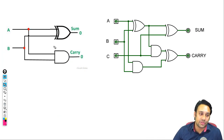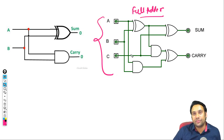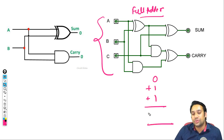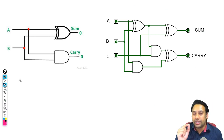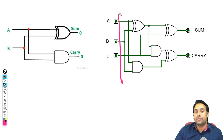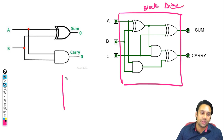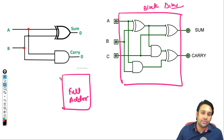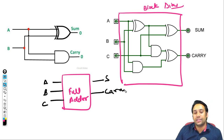Half adder is used to add 2 bits of information. Then you have a full adder — sum will be 0 and carry will be 1. We have a full adder for this sum and carry. Generally, this is a circuit diagram, but we can also represent it as a block diagram. The input is C — it will give us a sum and a carry.